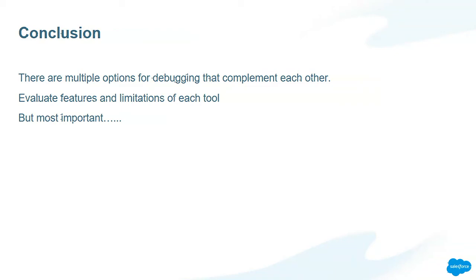So what did we see today? We looked at debugging in general and the different options on the platform. We talked about the free out-of-the-box ones, and we highlighted some features in Illuminated Cloud and Welkin Suite. Those two suites of products offer a full set of developer tools, not just in the debugging space, but a whole bunch of stuff you should look into as a developer. We also looked into the interactive debugger, which runs in real time — something we really like. On the Welkin Suite and Illuminated Cloud side, we like those because they run in production and they also run for asynchronous code.